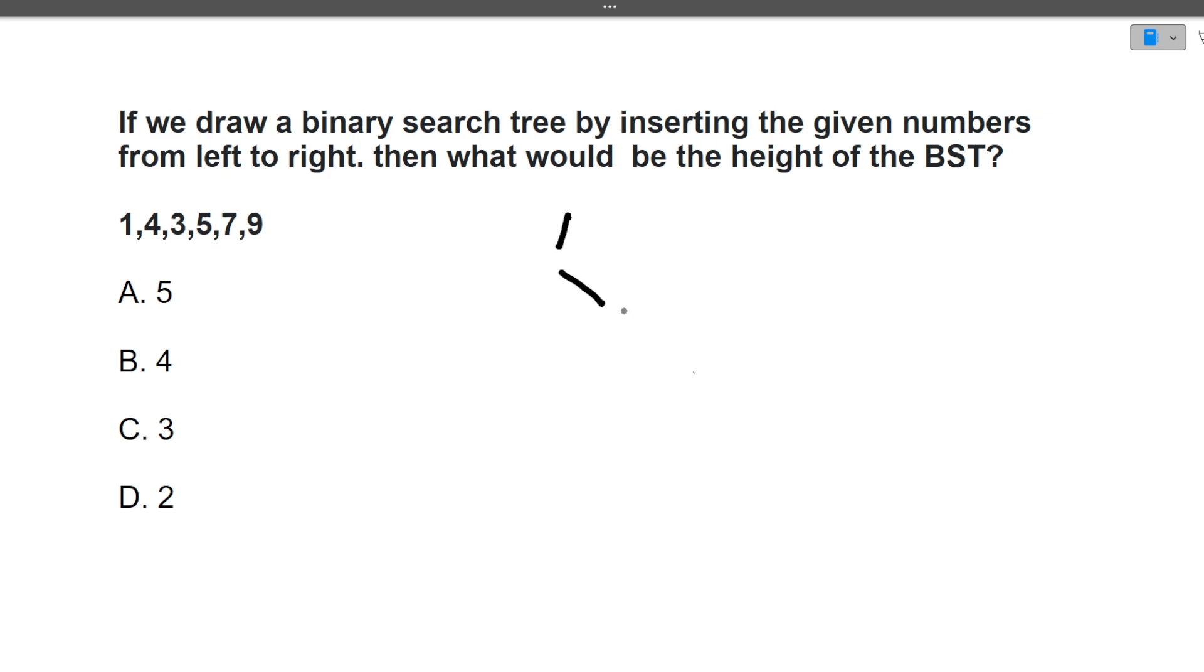So 1 will come here. We know that BST from the root node, left is the small one, right is the big one. So then is 4, so 4 is greater than 1 so it will be coming here. Then is 3, so 3 is less than 4 so it will be coming here. Then next is 5, so 5 is greater than 1 and then it is greater than 4 so 5 here. Then 7 again 7 will come here and then 9 so 9 will come here. Now this is the binary search tree. With a single node height is treated as 1, then this is 2, then this is 3, then this is 4, then this is 5. So height of the tree will be 5, this is the correct option. I hope it's clear to you.